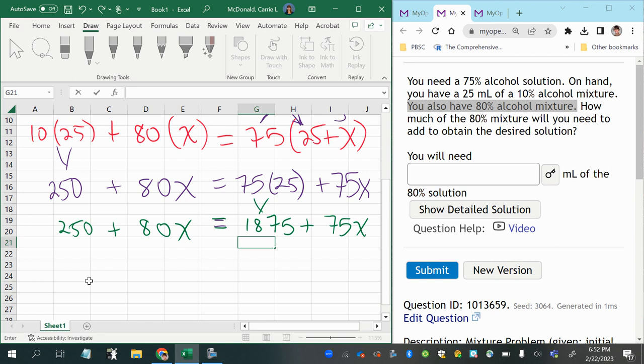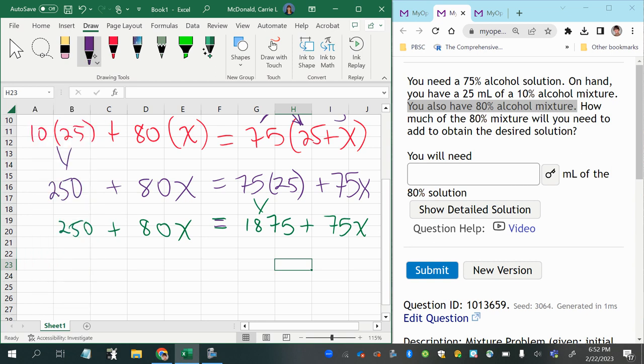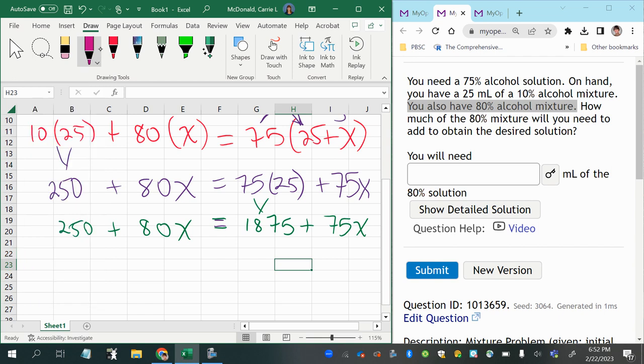So to combine like terms, first of all there are no like terms on each side of the equal sign right now. So what I will do is I will bring all the x's to one side and all the non-x terms, the constant terms, to the opposite side. So I'm going to subtract 75x from both sides.